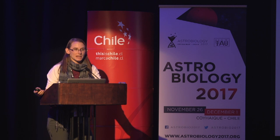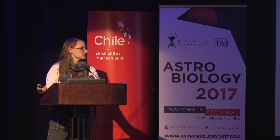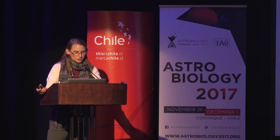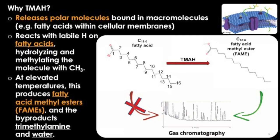So why TMAH? TMAH is powerful in that it can release polar molecules that are bound within macromolecules. The little fatty acids bound in a cellular membrane can be released, made volatile, and detectable to GCMS analyses. With TMAH, we react with the labile hydrogens on a fatty acid, which hydrolyzes the molecule and then methylates it, making it detectable to GCMS. At elevated temperatures, we produce from these fatty acids fatty acid methyl esters, as well as byproducts trimethylamine and water.